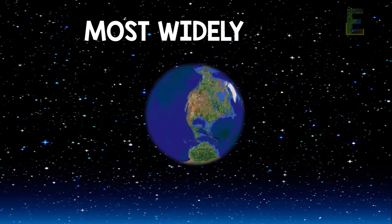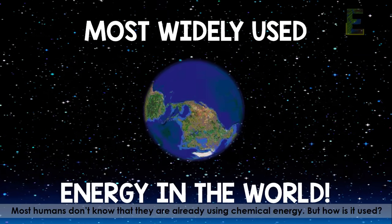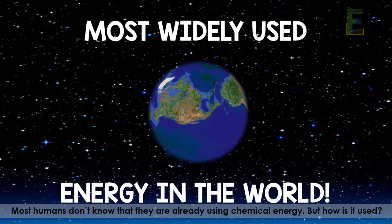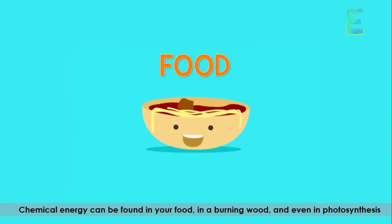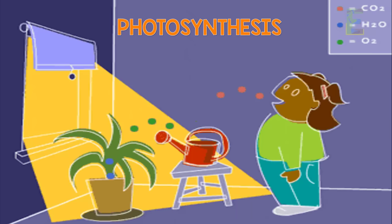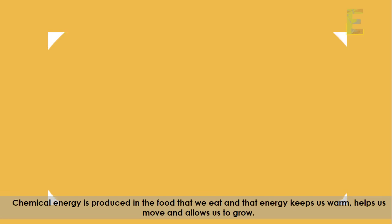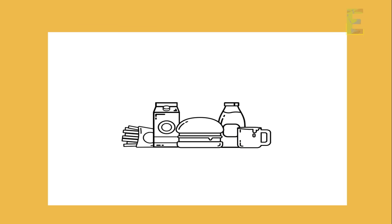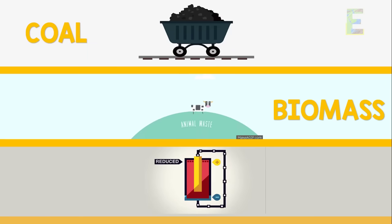Chemical energy is the most widely used type of energy in the world. It can be found in your food, in burning wood, and even in photosynthesis. Chemical energy is produced in the food we eat, and that energy keeps us warm, helps us move, and allows us to grow. Stored chemical energy can also be found in coal, biomass, and chemical batteries.